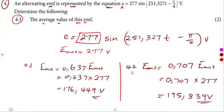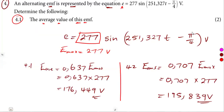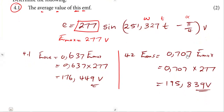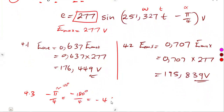We have the RMS value from this one. For 4.3, the phase shift in degrees — the phase shift is the alpha that we are given, which is pi over 4. Remember, this is omega T plus or minus alpha. We are given to determine that in degrees, having pi over 4 there — these are radians. So it is going to be negative pi over 4. Remember, pi is equivalent to 180 degrees, so it is negative 180 divided by 4, which is negative 45 degrees.